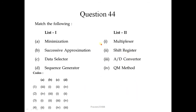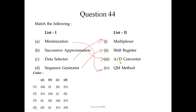Question number 44: match the following from Digital Electronics. Minimization of Boolean Algebra is done by the QM (Quine-McCluskey) method, also known as the K-map method. Successive approximation method is used to convert analog to digital. The data selector is a multiplexer. And the sequence detector is the shift register. The correct sequence is 4, 3, 1, 2; the second option is correct.